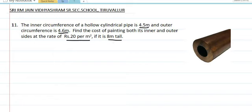They are talking about a hollow pipe. You can see in the diagram. In this, they have given the circumference — circumference is the distance around. Circumference of the inner pipe is given as 4.5 and circumference of the outer pipe is given as 4.6, and the length is given as 8 meter.